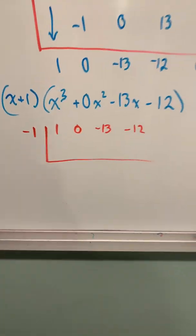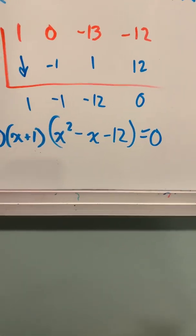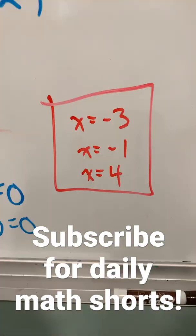We'll set up another synthetic division table, repeating the same process to get these coefficients. Now we've got both x plus 1 factors, and my goodness, we have a trinomial factor. Factoring light speed results in this, and these x-intercepts.